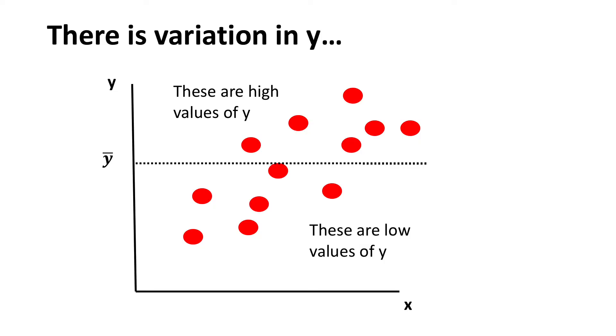Here you see a scatterplot. I've actually indicated the mean value of y with y-bar. You can see that there are high values of y and there are low values of y. That's what we mean to say there's variation in y. Not every value is the same.